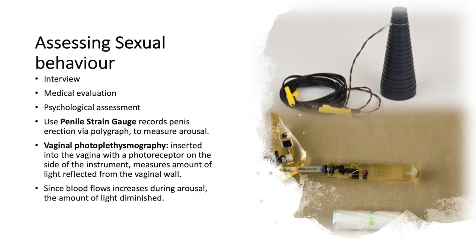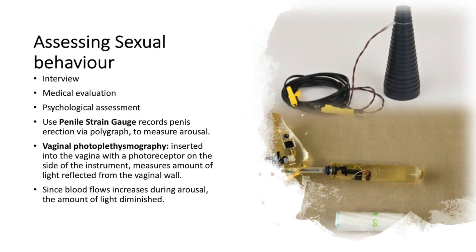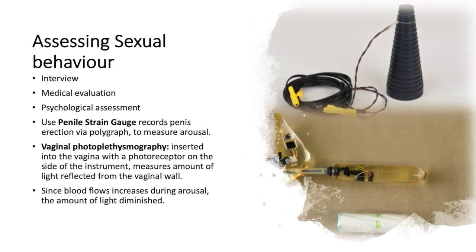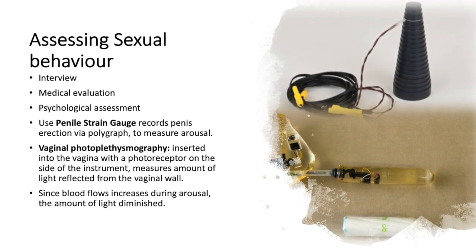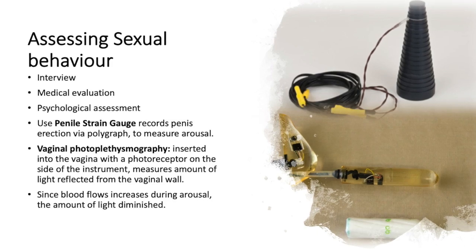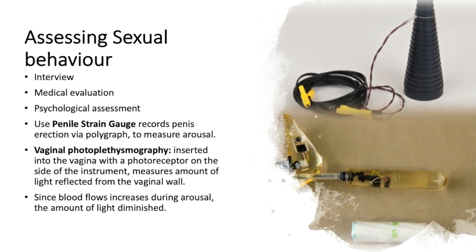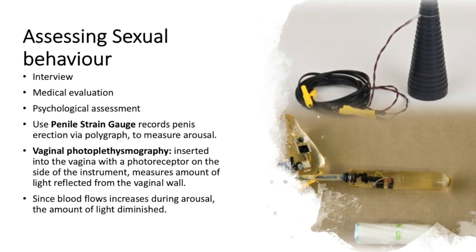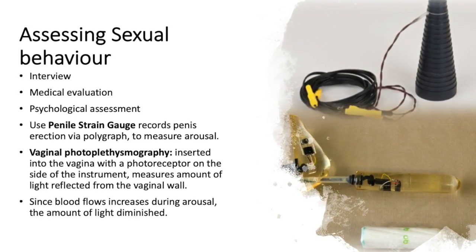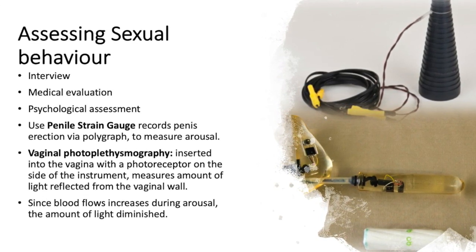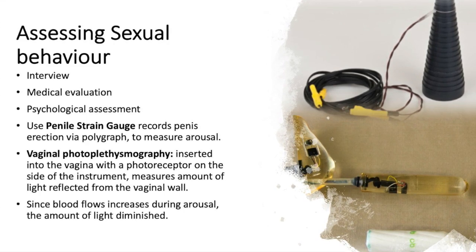Assessing sexual behavior involves interviews, medical evaluations, and psychological assessment. For men, psychologists can use penile strain gauge recording devices that measure erection via polygraphs to measure arousal. For women, there is vaginal photoplethysmography, which is inserted into the vagina with a photoreceptor that measures light reflected from the vaginal wall. Since blood flow increases during arousal, the amount of light diminishes, indirectly measuring a woman's level of arousal.